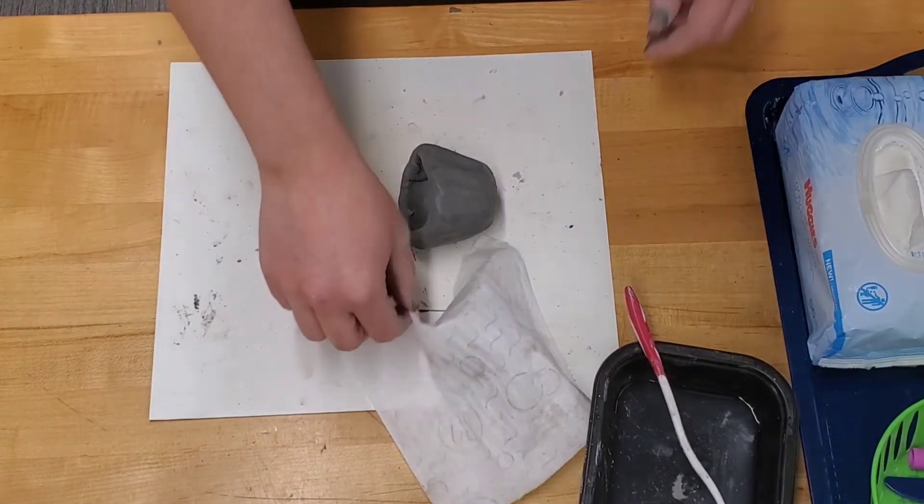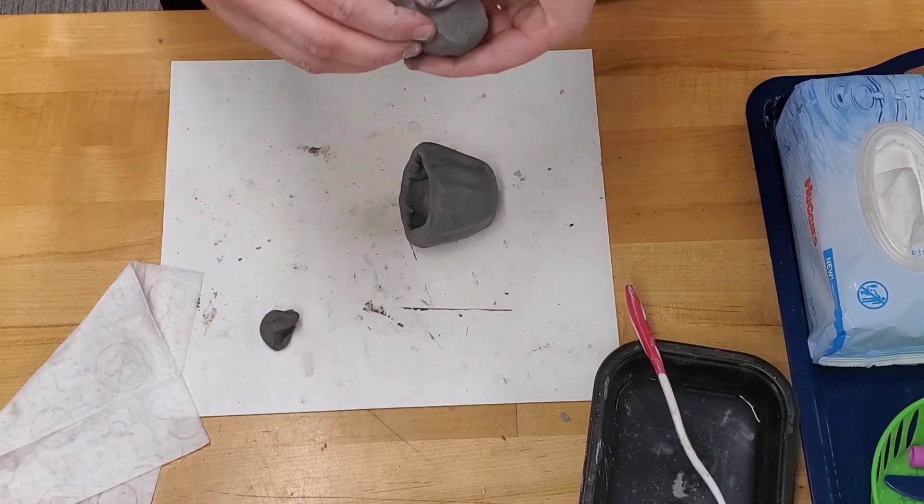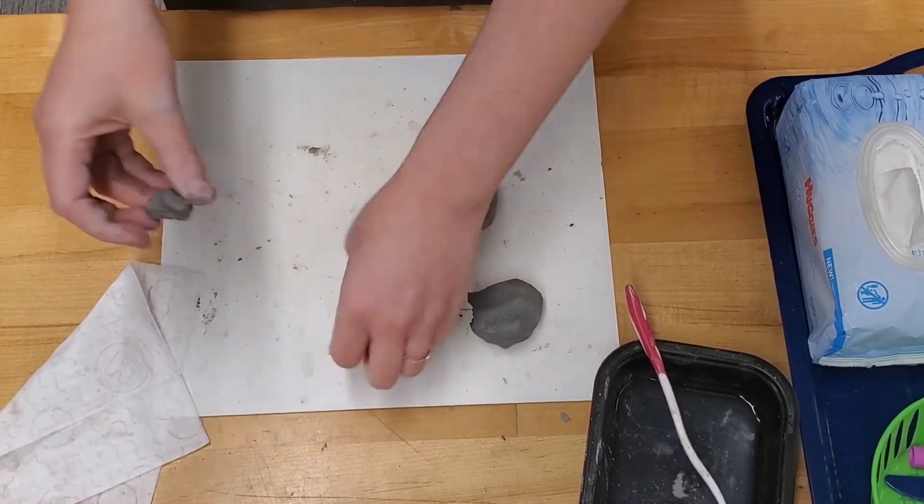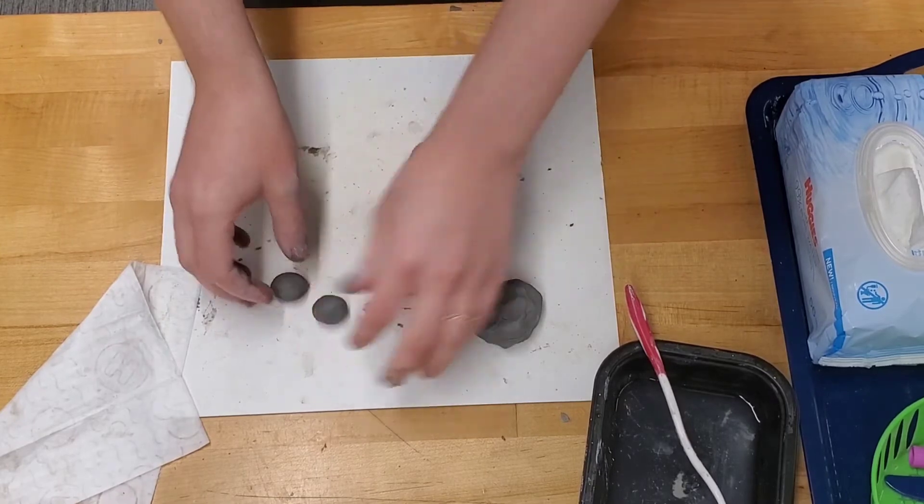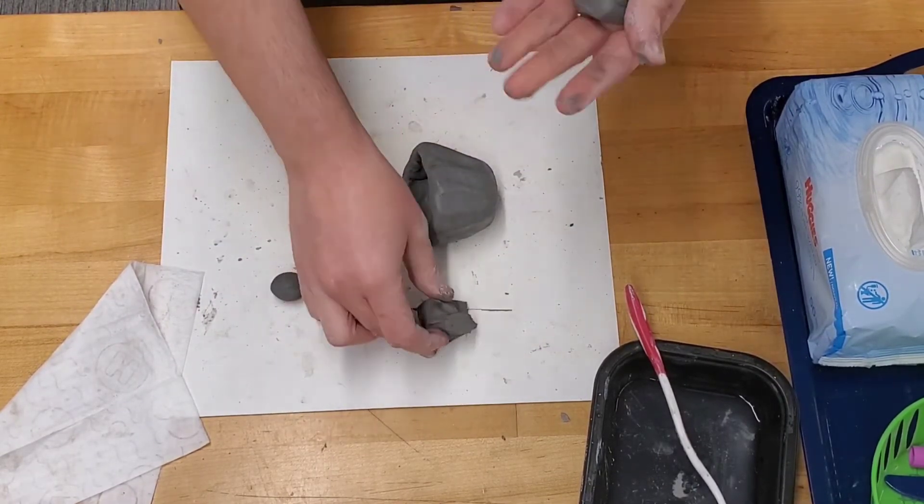Using the rest of the clay, you're going to make the eyes and the fins. Get two small pinches of clay and roll them into balls for the eyes. Split the rest of the clay in half.